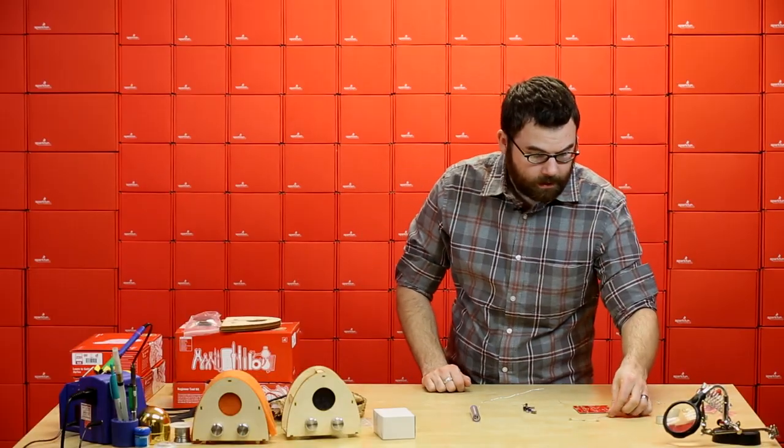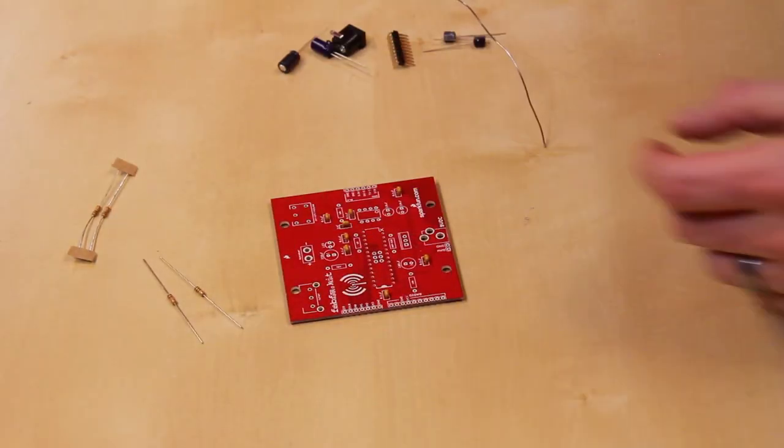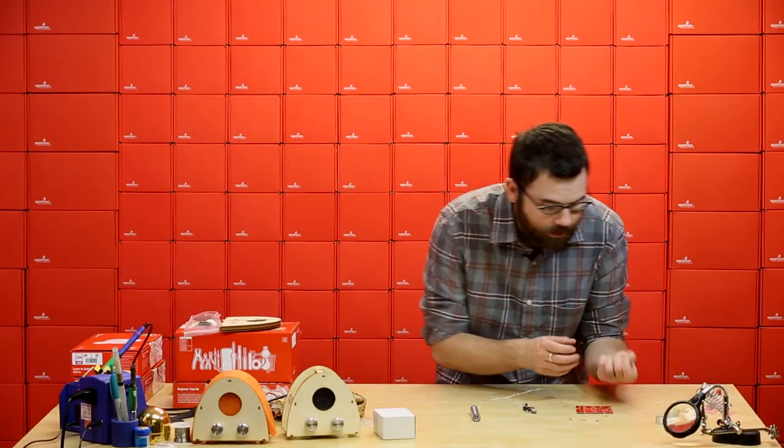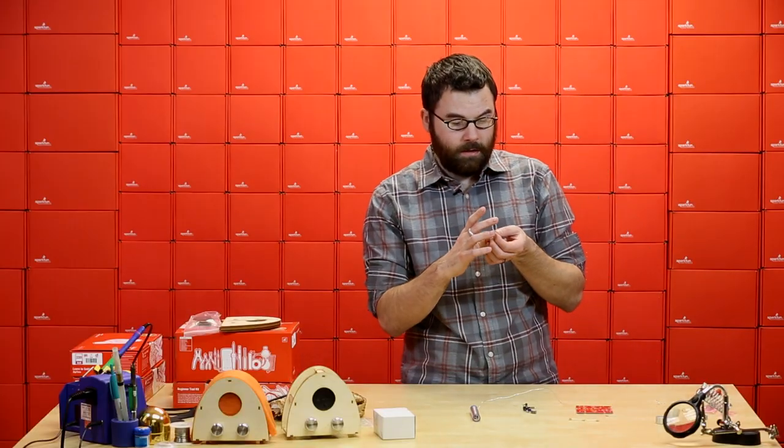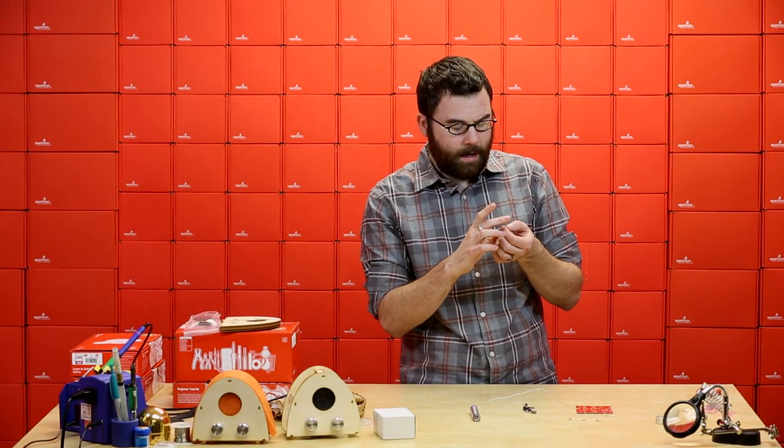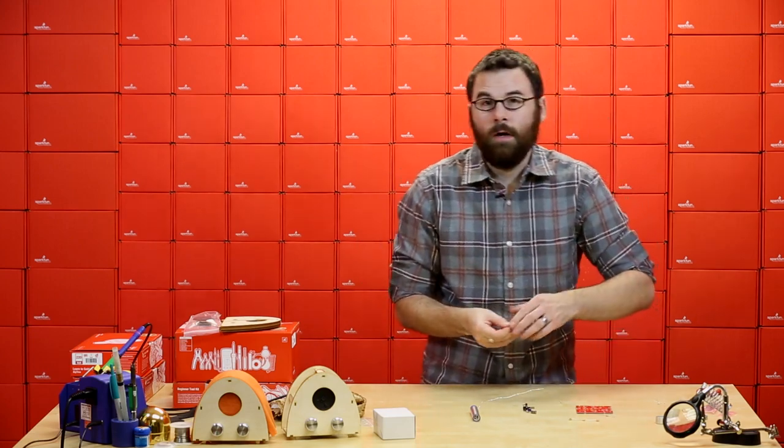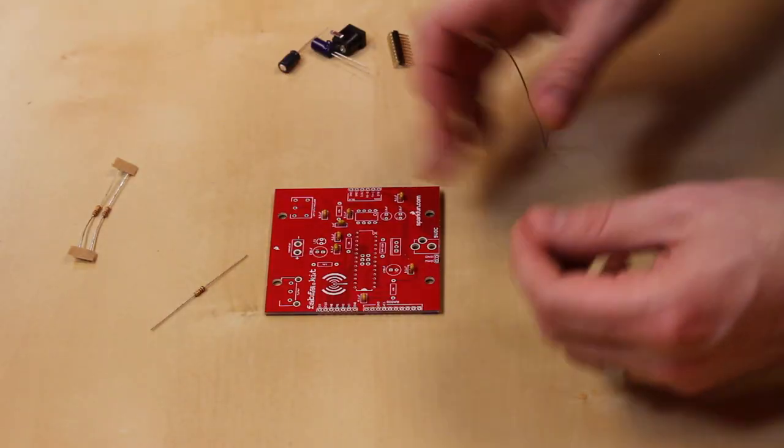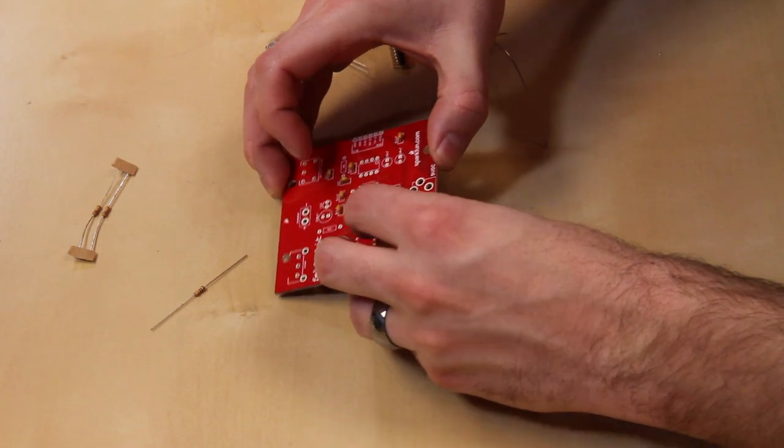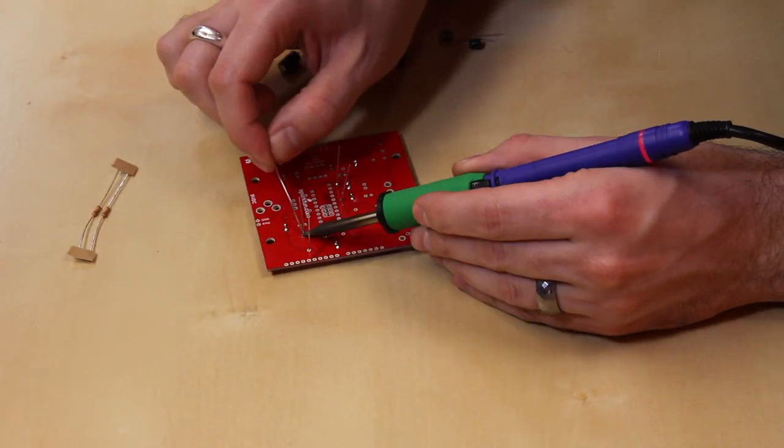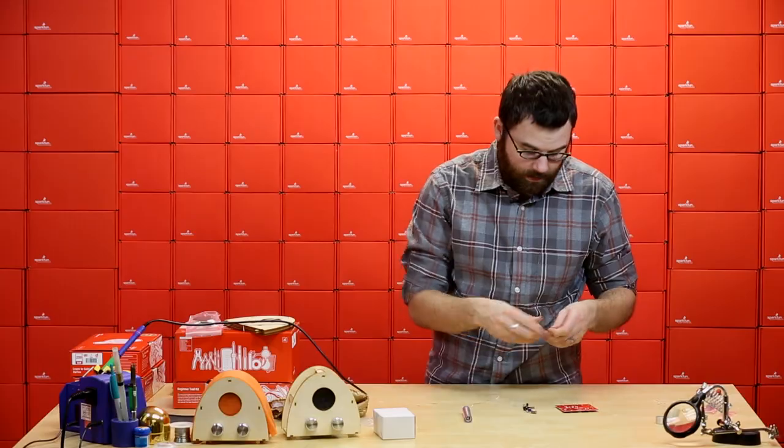So next we're going to solder in the resistors. There are two 10Ks and two 15Ks. I'm going to start with the 10s for no good reason. The 10s are brown, black, and orange, and the others are the other color. So we're just going to go ahead and put these in there. So just bend the leads, pop them down. And now for the 15Ks.